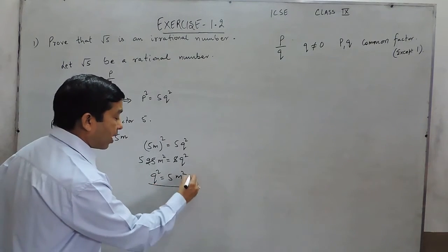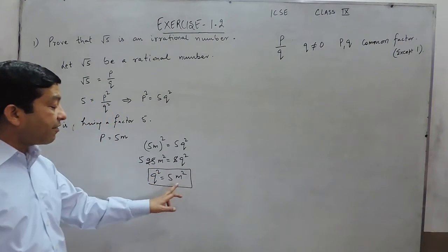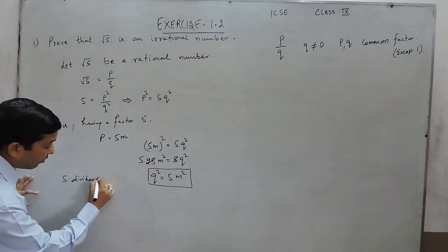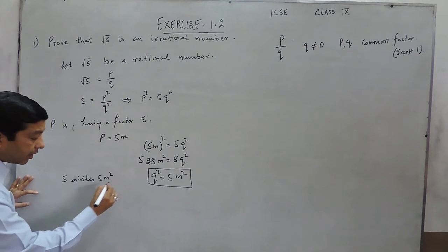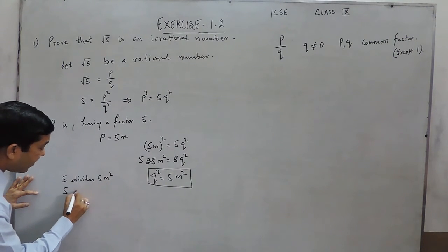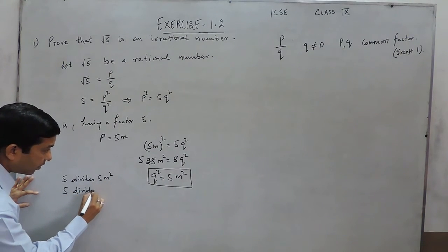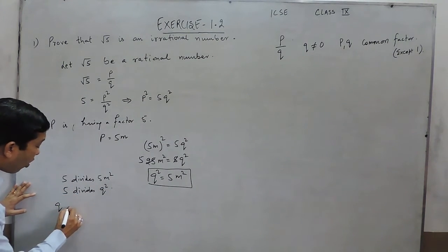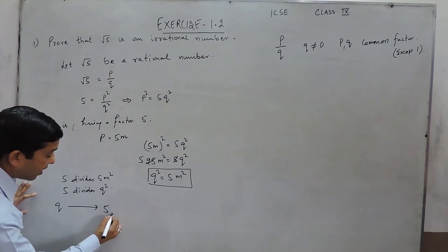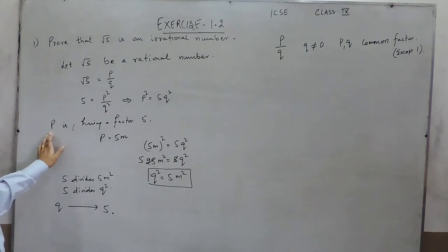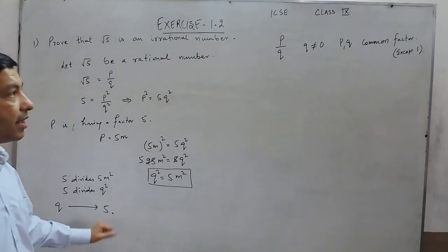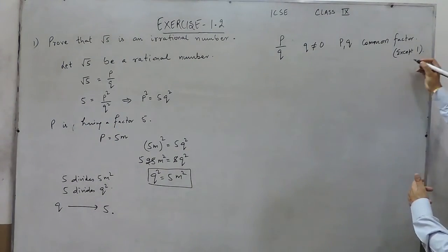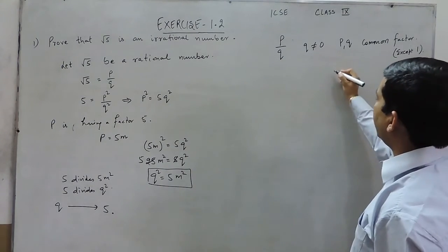When Q² is equal to 5M², it means 5 divides 5M², which also means that 5 divides Q². It means the Q term is also having a factor of 5. Now, when P is having a factor of 5 and Q is having a factor of 5, that means P and Q do not have any common factor except 1 — but here the common factor is 5.